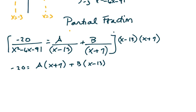The easiest thing to do here would be to pick values for x. I'm going to let x equal negative 7 so I can get rid of this term.